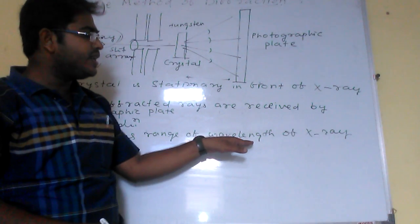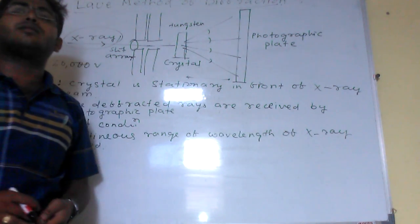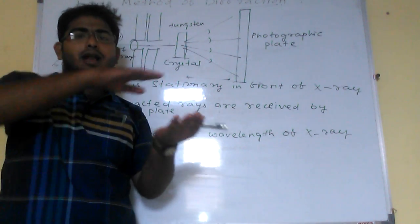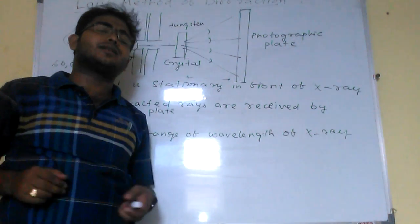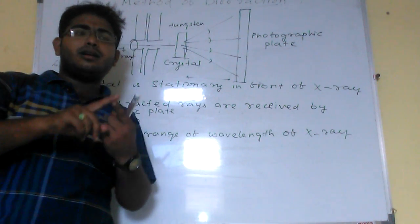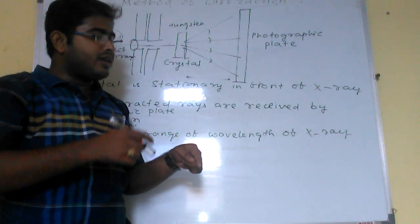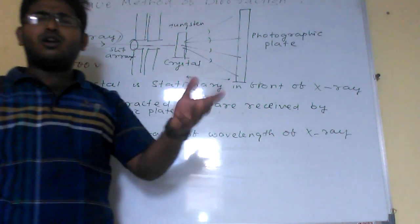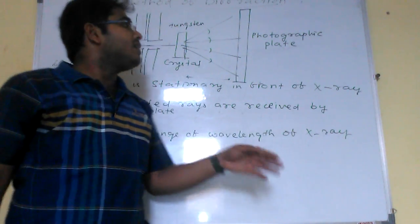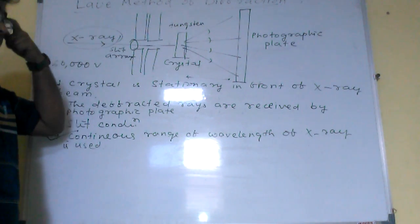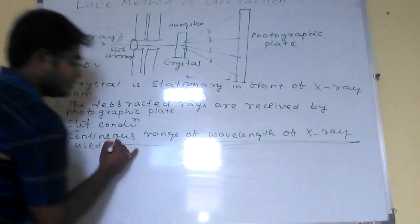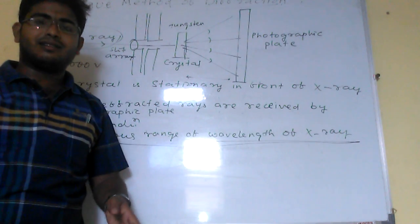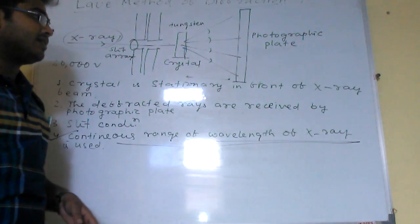The advantage of getting this continuous wavelength range is that previously in the normal diffraction pattern, there are two planes and diffraction has to occur from these two planes. For that we need a wavelength that can satisfy the Bragg condition for these pairs of planes in the crystal, which is not very probable. But in the new method, we use a continuous wavelength range, so any one wavelength can satisfy the Bragg condition.